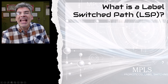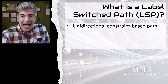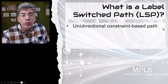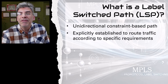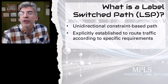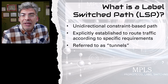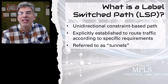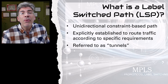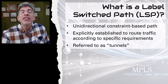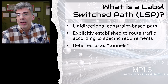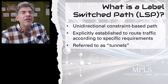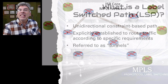Label switched paths, or LSPs, are at the very heart of MPLS traffic engineering. An LSP is a unidirectional, constraints-based path through an MPLS network that is explicitly established to route traffic according to specific requirements. LSPs are also often referred to as tunnels because they do encapsulate data and maintain the same ingress and egress devices like tunnels do. However, LSPs have specific characteristics that are unique to MPLS, so they are a very special kind of tunnel.